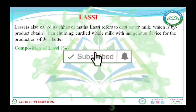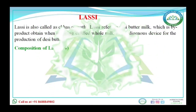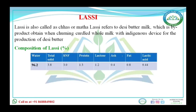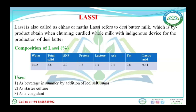Lassi is actually a byproduct of churning of cultured milk using indigenous devices. Its composition: 96.2% water, total solids 3.8%, SNF 3%, protein 1.3%, lactose 1.2%, ash 0.4%, fat 0.8%, and lactic acid 0.44%. Its uses include: as a starter culture, as a coagulant, and as a beverage in summer.